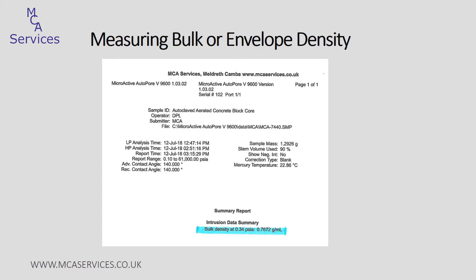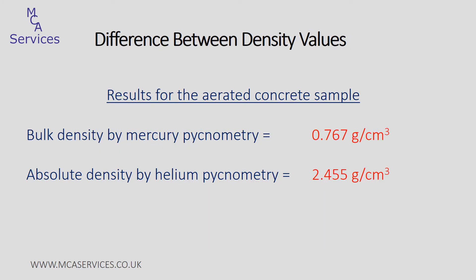Ultimately the Autopore can be used to generate a report showing the bulk density of the sample, and this has been calculated at 0.34 PSIA at a temperature of 22.86 degrees C. We can now look at the difference between the bulk density and the absolute density of this particular sample. There's really quite a big difference and this is entirely due to the volume of porosity within the sample. These are two very different physical properties of the material, and when considering the density of a material — which is quite a critical physical characteristic — both of these values really should be taken into consideration.